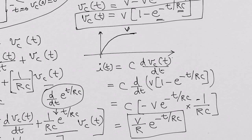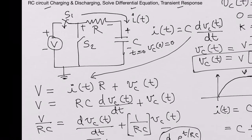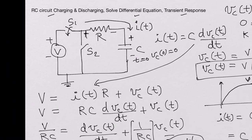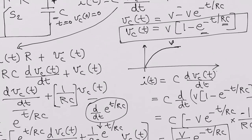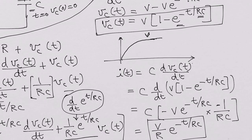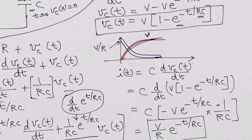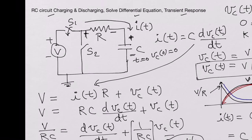So I(T) looks like this: initially at the beginning when there is no voltage across the capacitor, all the voltage is dropped across the resistor and the current flowing is V/R. Once the capacitor is charged all the way to voltage V, there is no more current because the voltage across the resistor becomes zero. If you plot the current, it starts at V/R and exponentially decreases to zero after five time constants. We will look at the discharging of this circuit in the next video.